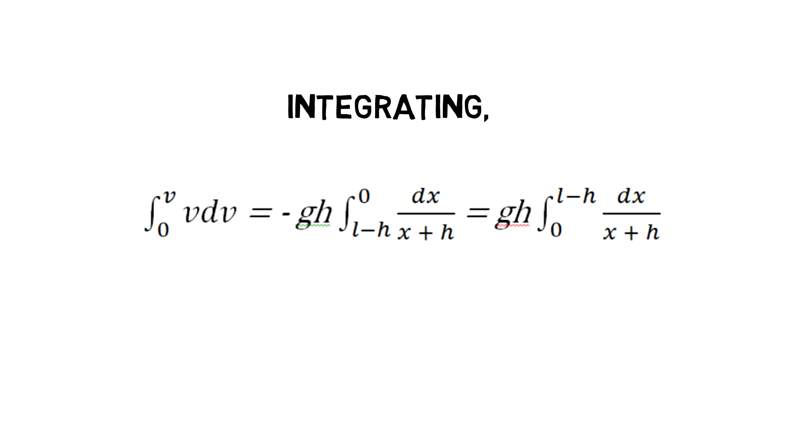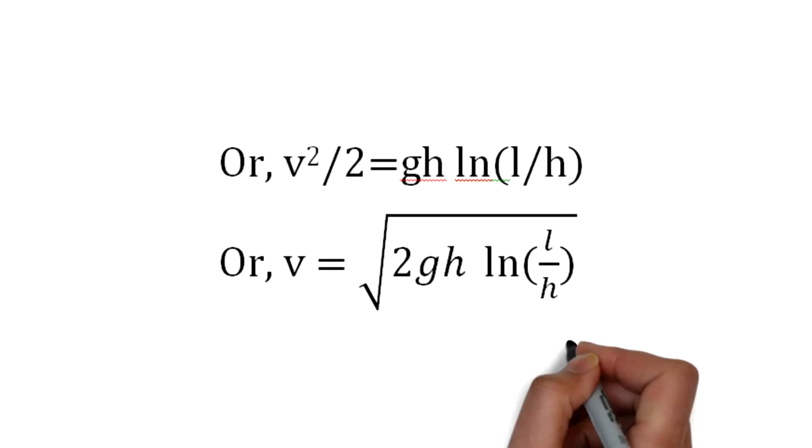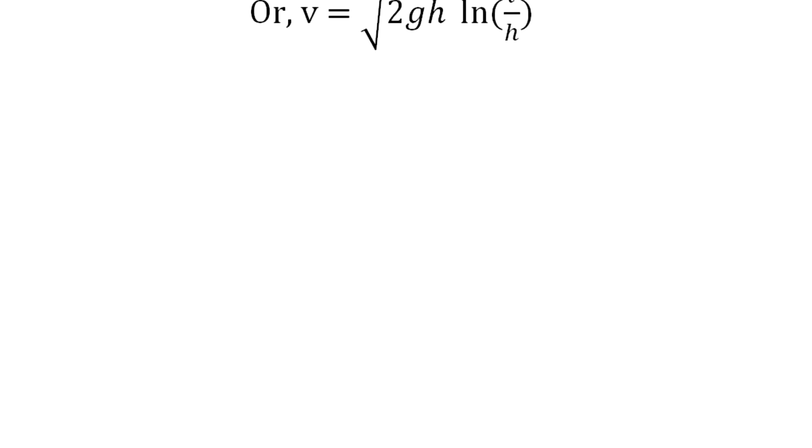Or v²/2 = gh log(l/h). Or v = sqrt(2gh log(l/h)). And that is all we wanted.